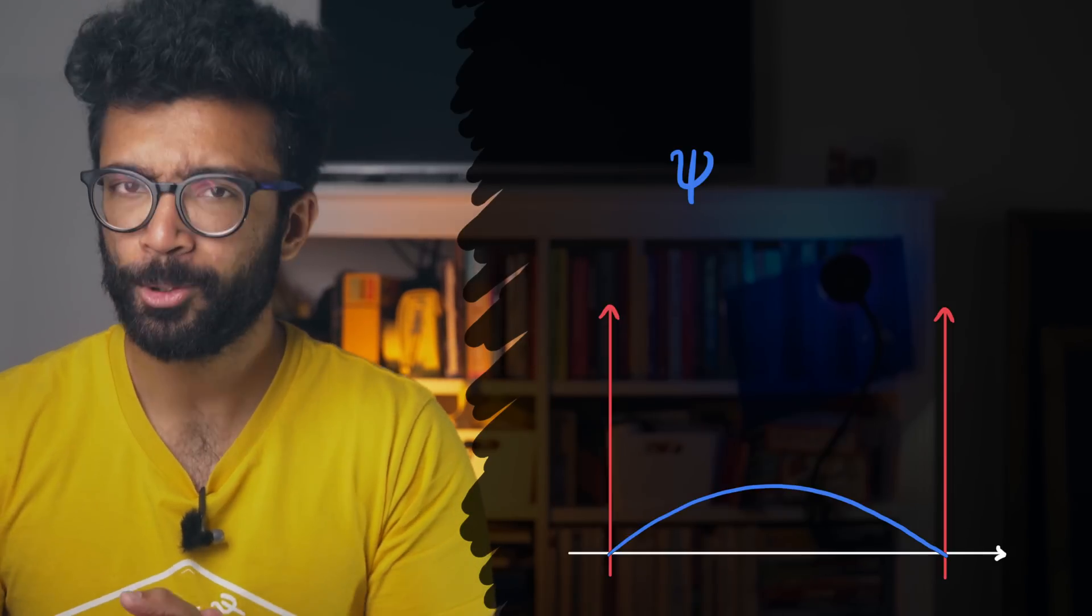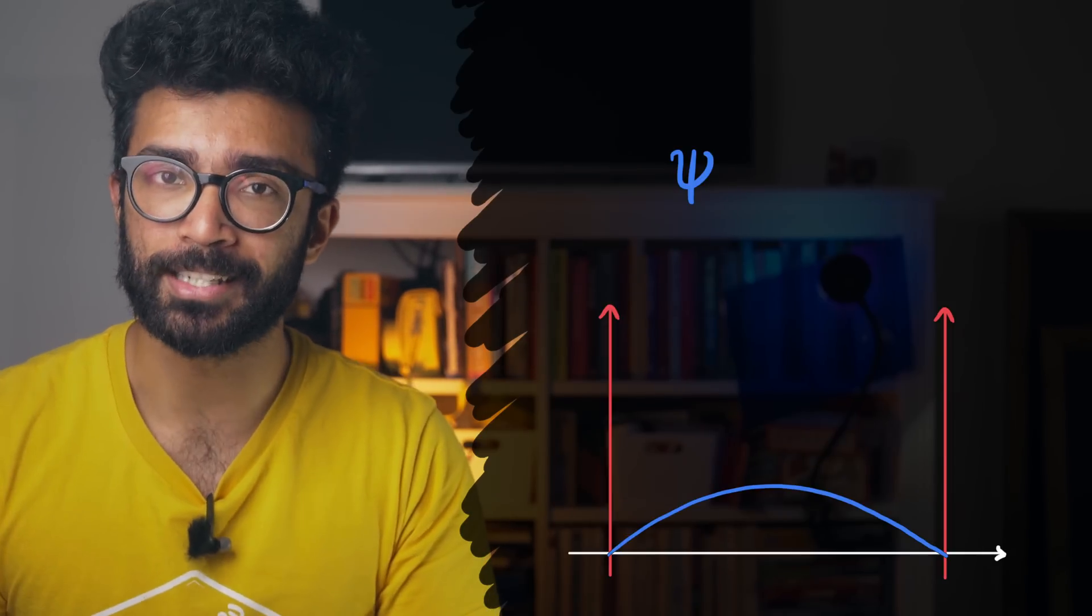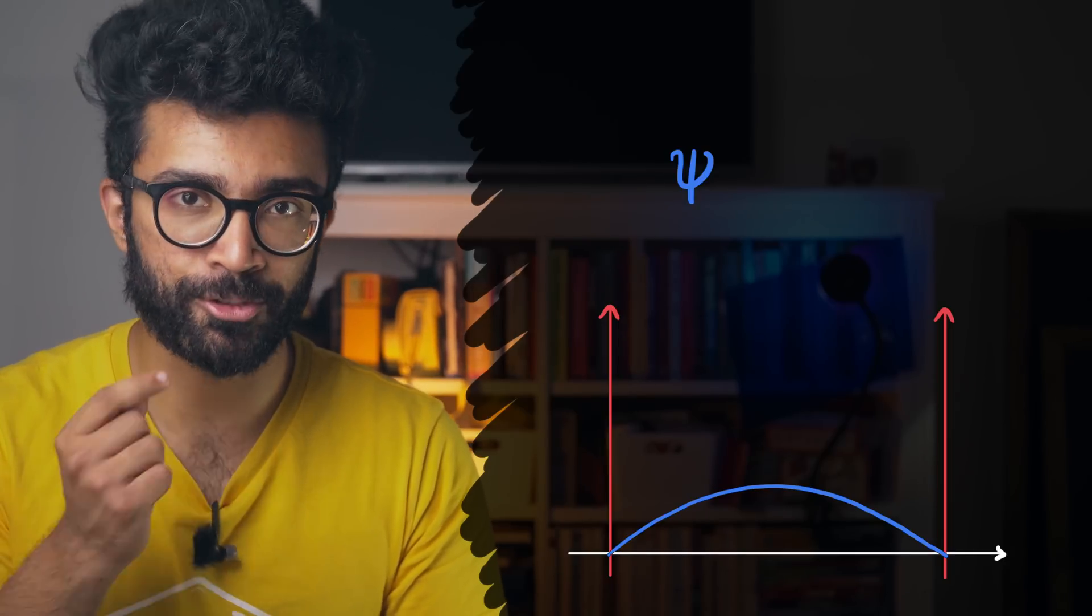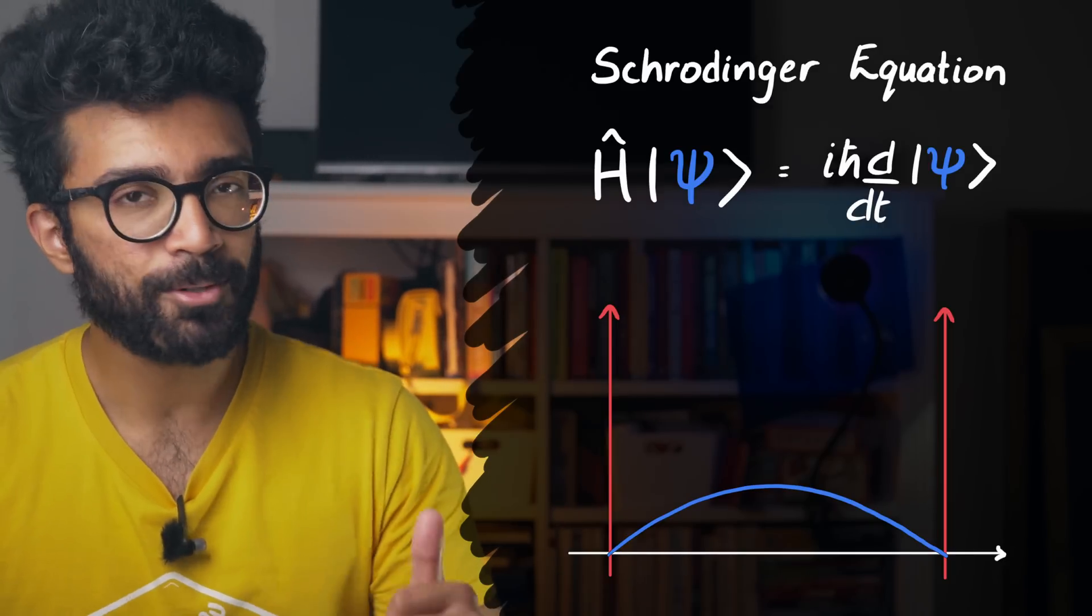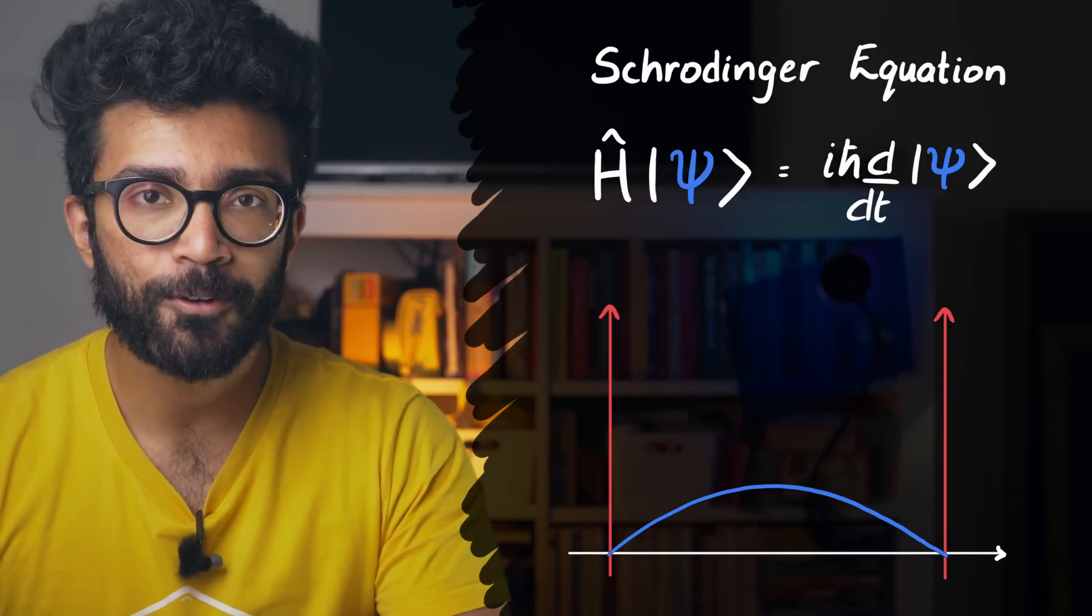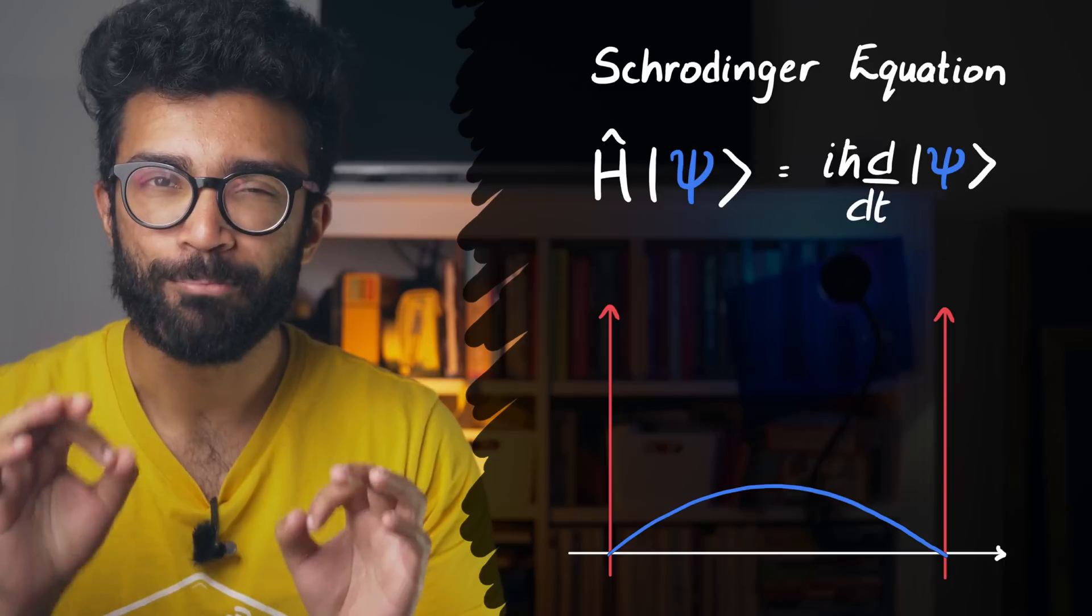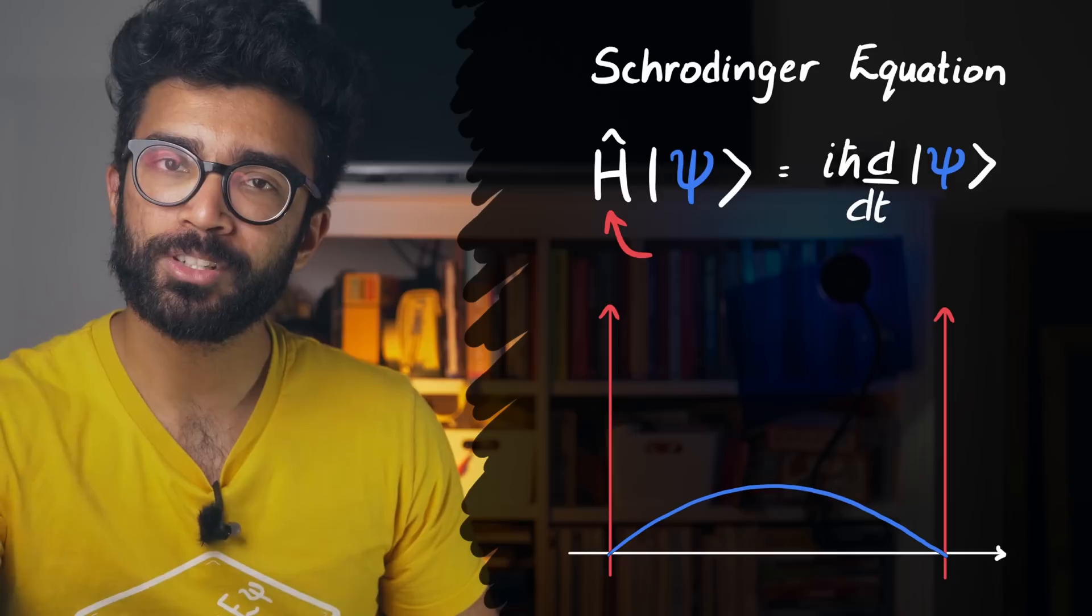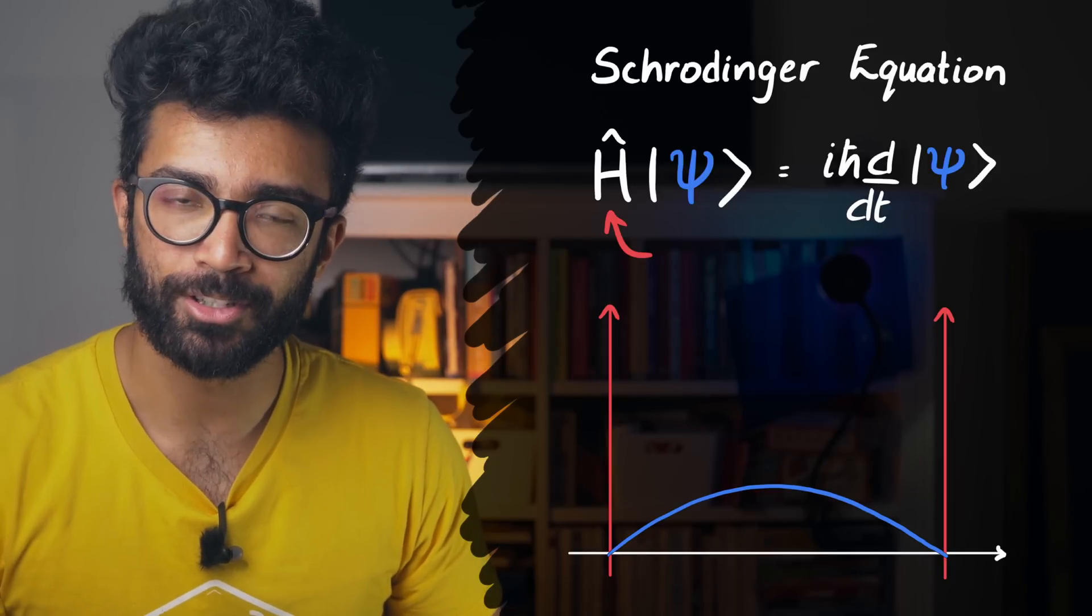And secondly, the wave function is important because this is the quantity that actually changes over time, according to the Schrödinger equation. This equation is the main governing equation of quantum mechanics. Check out this video up here for a full overview of what it means. It basically accounts for the stuff making up the system in order to determine how the system will change over time.